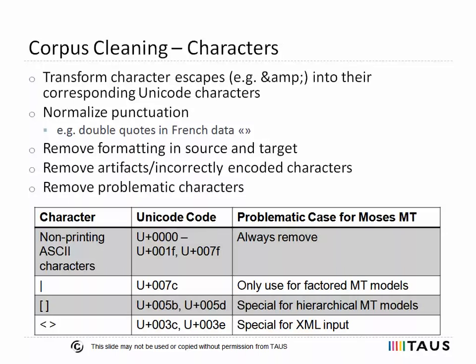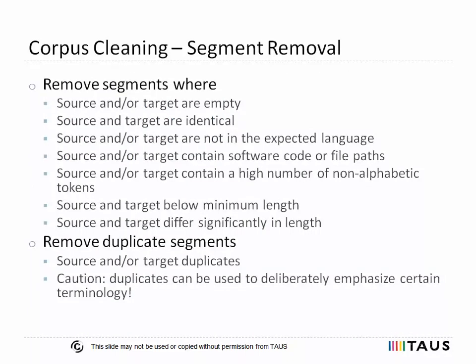If not already removed during data conversion, any formatting characters — such as reading direction indicators for right-to-left languages — should also be removed. Some non-word characters can create problems when using the Moses open source MT system. Non-printing characters should always be removed. Vertical bars should always be removed unless we train factored MT systems, which will be explained later in the tutorial. Square brackets and less-than and greater-than signs take on special meaning under certain configurations. After cleaning up the characters, we can move to the segment level.